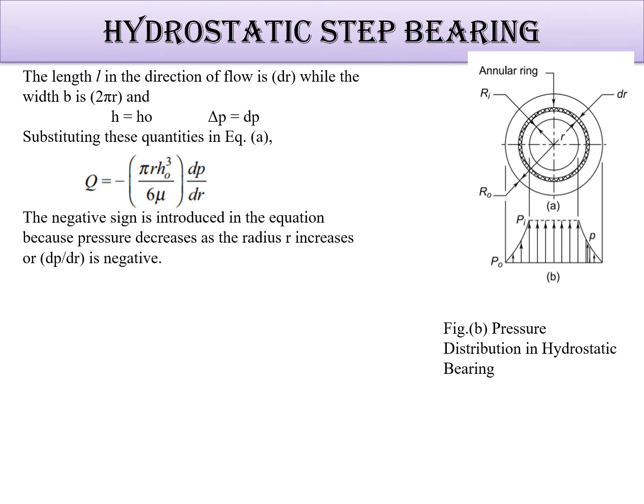The negative sign is introduced in the equation because pressure decreases as the radius r increases. As r increases, definitely the pressure decreases because the thickness will get increased. The radius is increasing, that means area is increasing, the pressure will be less.